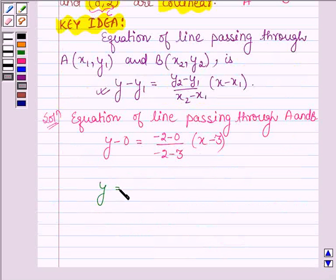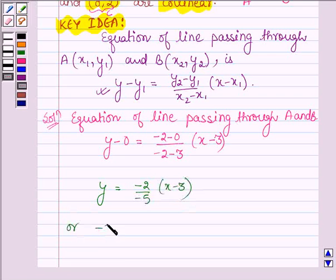y = -2/-5 * (x-3) or we have -5y = -2x + 6